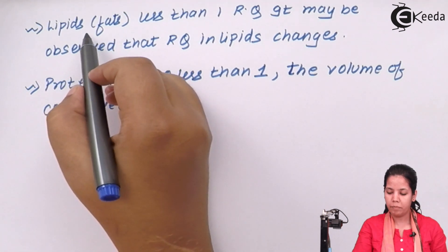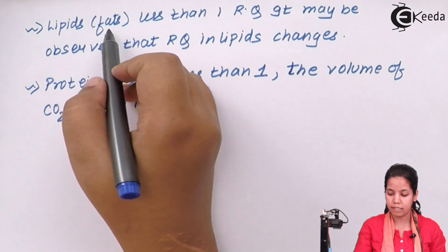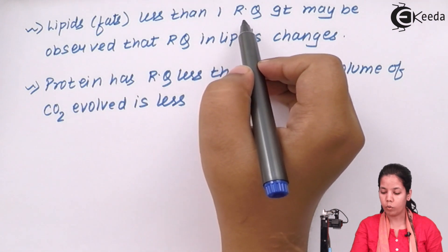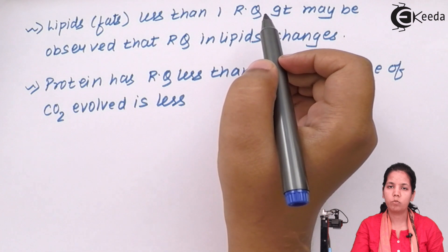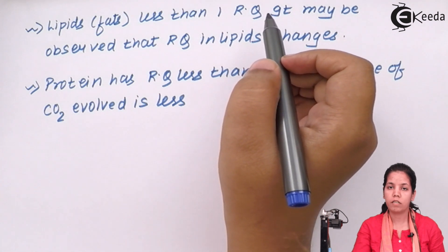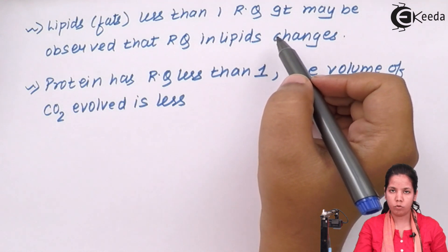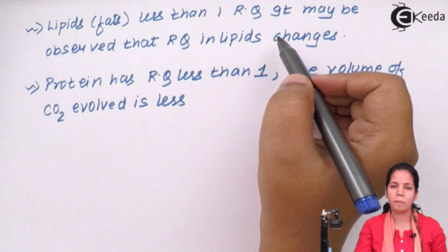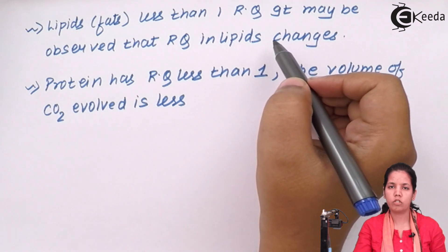In the case of lipids or fats, whether it is unsaturated, saturated, or polyunsaturated fatty acids, the respiratory quotient will be less than one. It is observed that certain lipids have the respiratory quotient changing accordingly. Depending upon the requirements, the respiratory quotient may slightly change or drift.